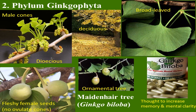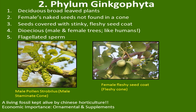A biologist found them and they became an ornamental success story — now they're found throughout the world. The traits of Ginkgophyta: deciduous broad-leafed plants; the female's naked seeds not found in a cone; seeds are covered with a sticky, fleshy seed coat; they're dioecious, with male and female trees; and they have flagellated sperm. The male pollen cone, or strobilus, is sometimes called a staminate cone and looks quite different than the fleshy female seed coat. It's a living fossil kept alive by Chinese horticulture, with huge economic importance for ornamental trees and supplements.